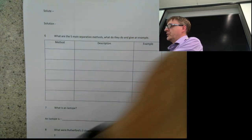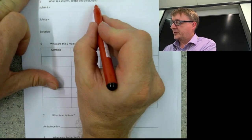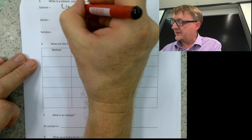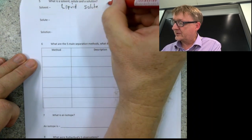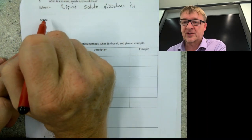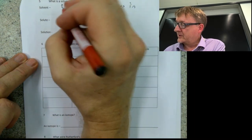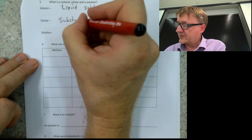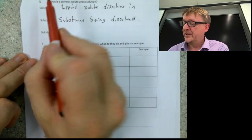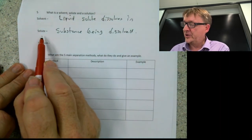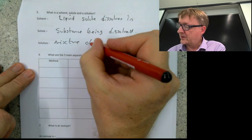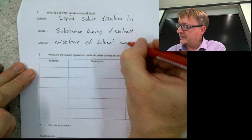Question number five — this is some wording terminology. What is a solvent, a solute, and a solution? The solvent is the liquid the solute dissolves in — that's the base product, like water. The solute is the substance being dissolved — so if you were making beer, the solvent is probably water and the solute could be the alcohol. And the solution itself is the mixture of the solvent and the solute.